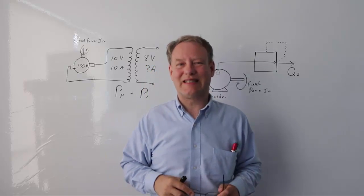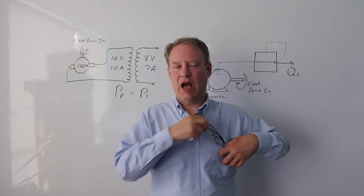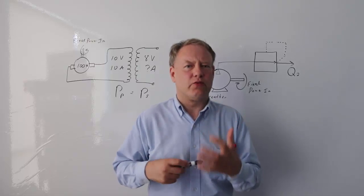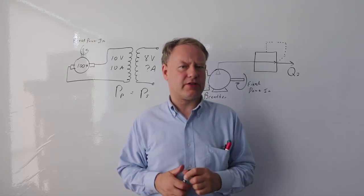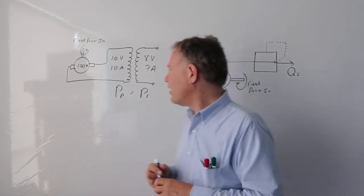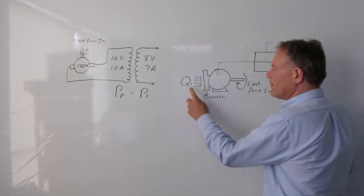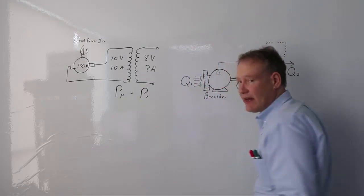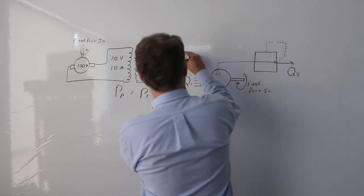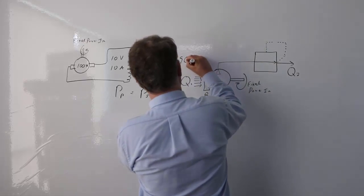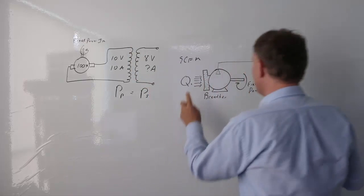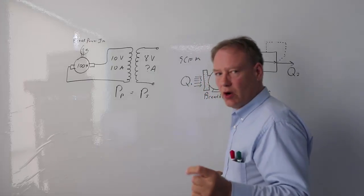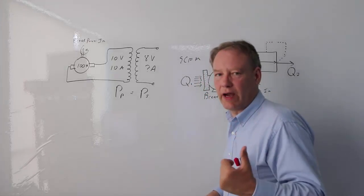Let's talk about compressor selection — how do we select the correct compressor? Compressors have different ratings. Some compressors are rated for the flow rate in, so you can get a compressor rated for SCFM. But more commonly, compressors are rated for the outlet flow rate.